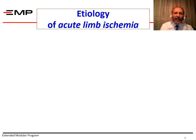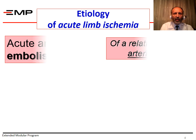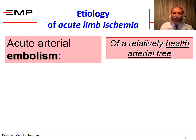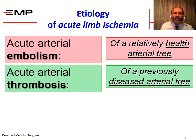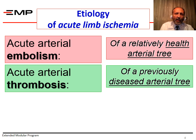Acute limb ischemia can occur in a relatively healthy arterial tree. In this case, the obstruction is possibly caused by an embolus coming from elsewhere. On the other hand, if the artery is previously diseased with atherosclerosis, for example, the arteries have segments of marked narrowing and diseased intima. Then the cause of arterial obstruction is usually acute thrombosis of the diseased arterial segments. So, acute ischemia can be embolic or thrombotic.